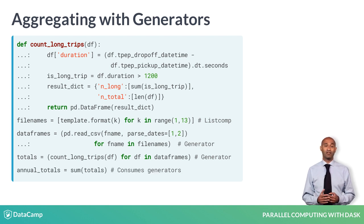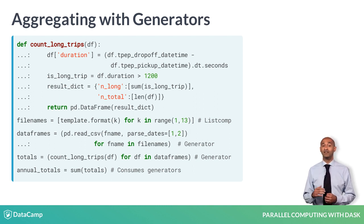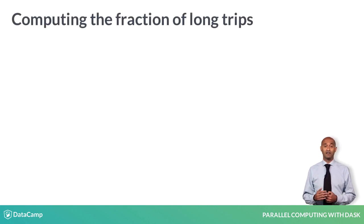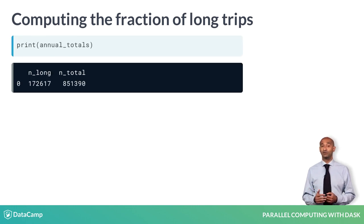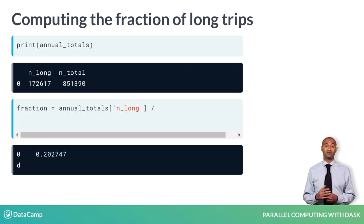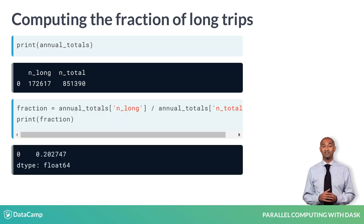Finally, the actual computation takes about 13.4 seconds on my laptop. Notice all computations are deferred until we compute sum of totals. Using the built-in sum function consumes the generator. The computed data frame annual totals has two columns, nLong and nTotal. The ratio, then, is the fraction of trips over 20 minutes in duration over the year 2015 — roughly 20%.